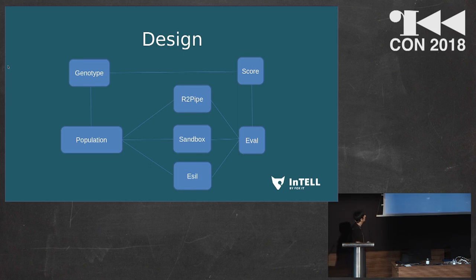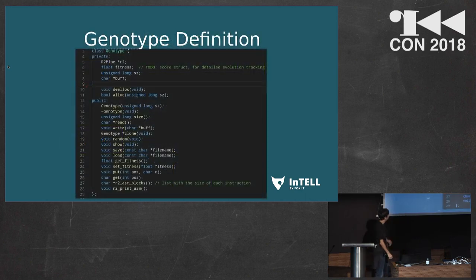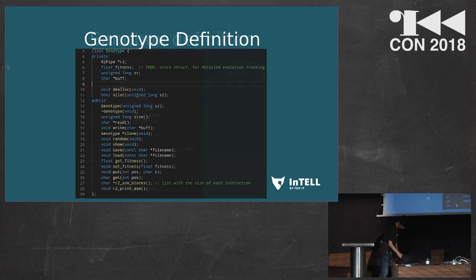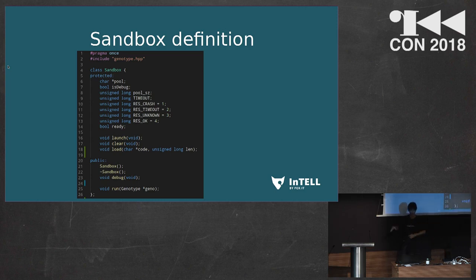The typical approach is storing only one float with the final score in the genotype. But for tracking evolution it's better to store more scores and more information about the evaluation of each sample. At the beginning I implemented an R2 pipe in each genotype, but this is not a good idea. It's better to have only one R2 pipe instance and share the pointer. The sandbox's definition is pretty straightforward: just running genotypes, evaluating them, and storing the information in the genotype.